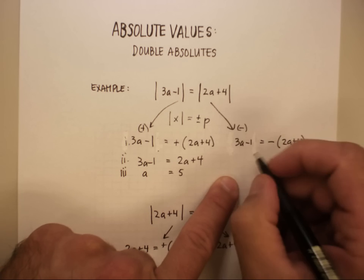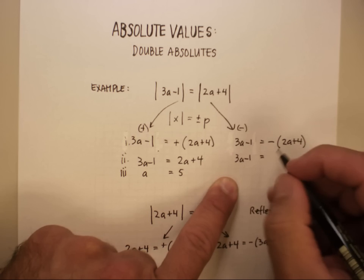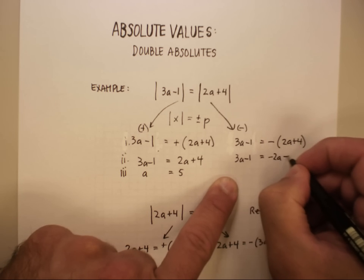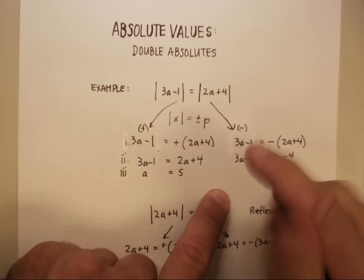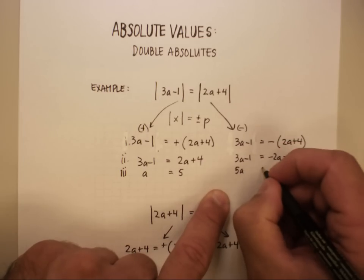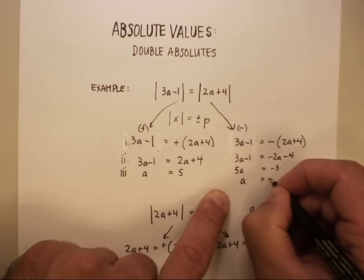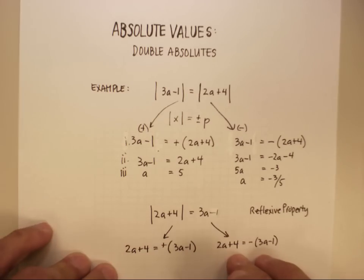Let's do this one. So second step, 3a minus 1 is equal to, let's distribute that negative. Let's go ahead and add that over here, let's add that over here. The 1 over to here and you get negative 3. 3a is equal to negative 3 fifths. Okay? That's what we have so far.